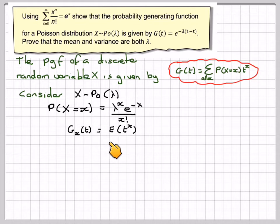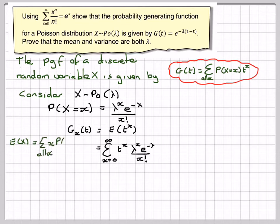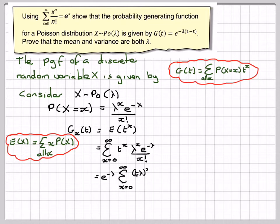So g(t) is going to be the expectation of t to the x, which is the sum from x equals 0 to infinity of t to the x times the probability, which is λ to the x times e to the minus λ over x factorial. Taking e to the minus λ out of the summation gives e to the minus λ times the sum from x equals 0 to infinity of (tλ) to the x over x factorial.